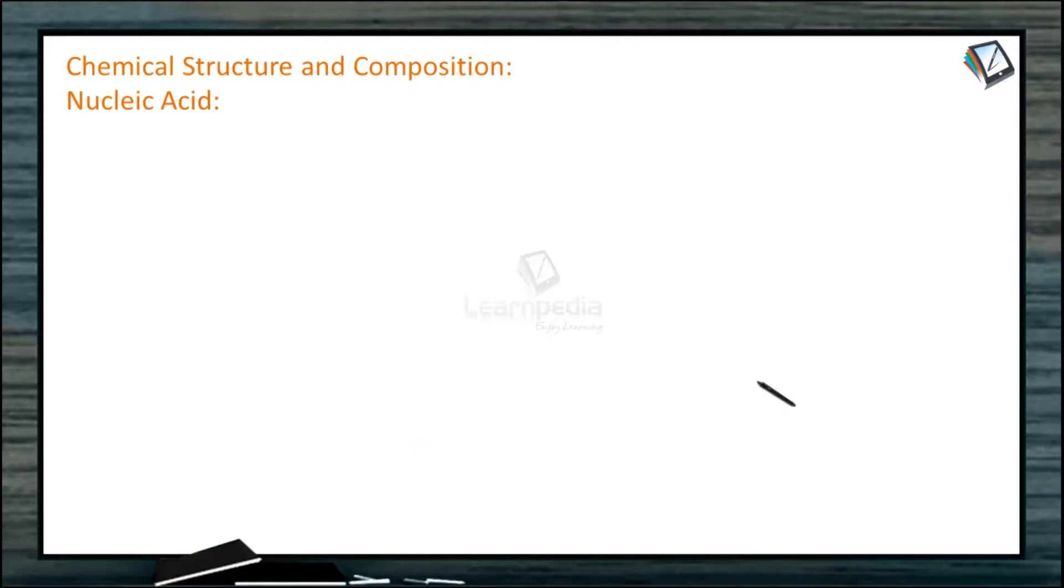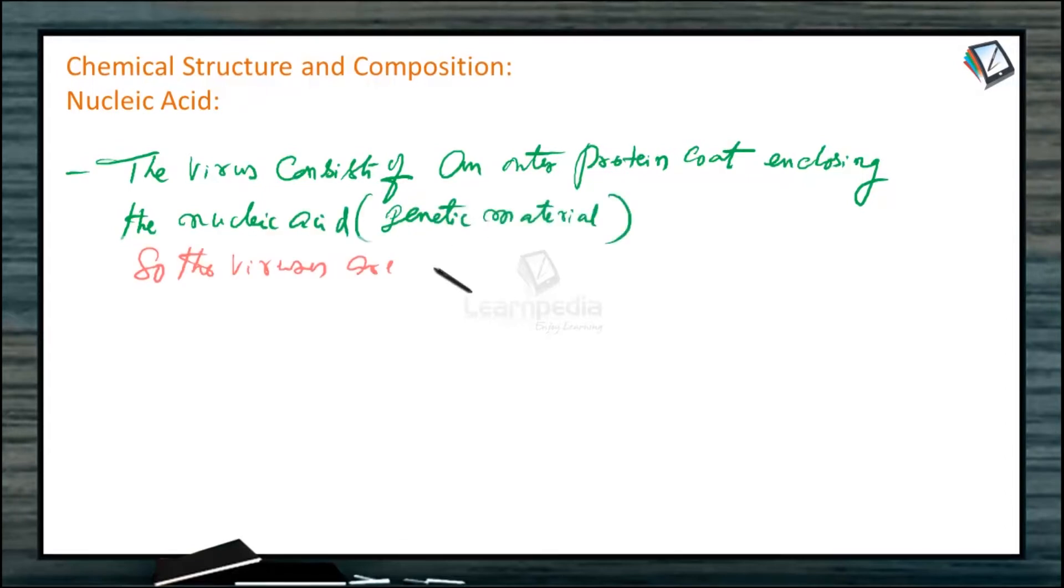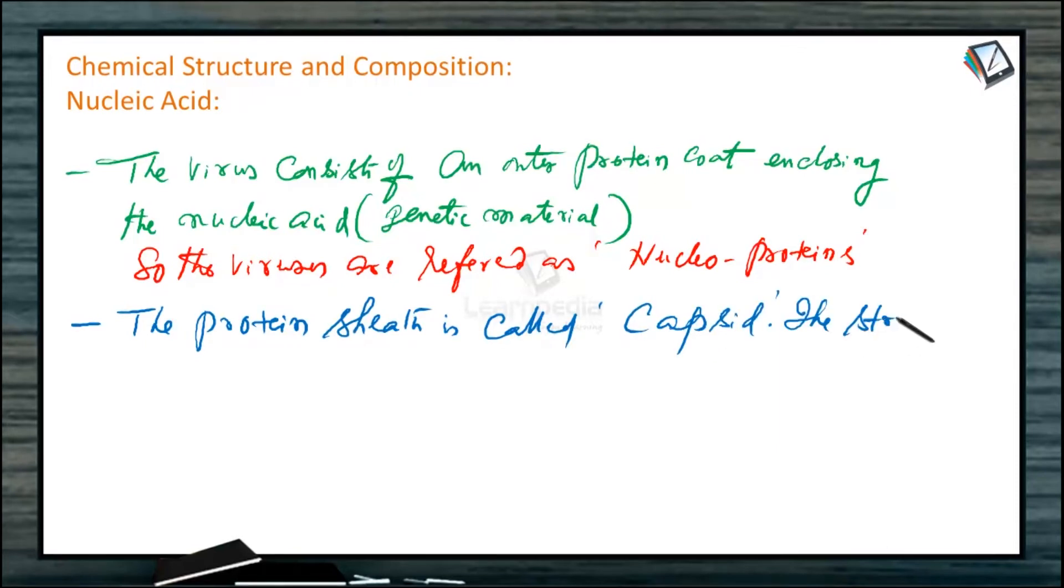Whatever be the shape and size of a virus, the virus consists of an outer protein coat enclosing the nucleic acid which is the genetic material. So the viruses are referred to as nucleoproteins. The protein sheath is called capsid. The structural units of the capsid are called capsomeres.